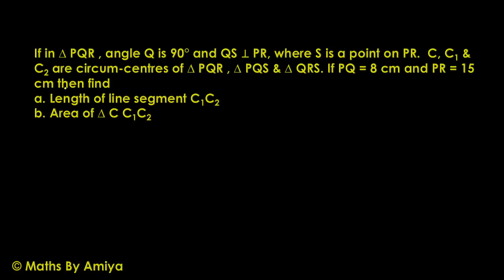If PQ is 8 cm and PR is 15 cm, then find length of line segment C1C2 and area of triangle C C1 C2.